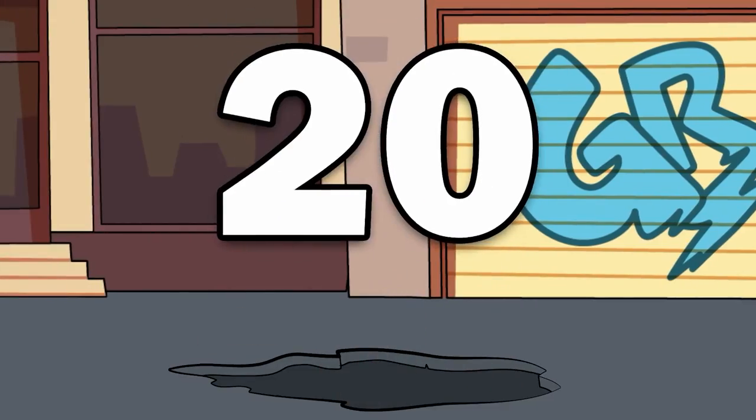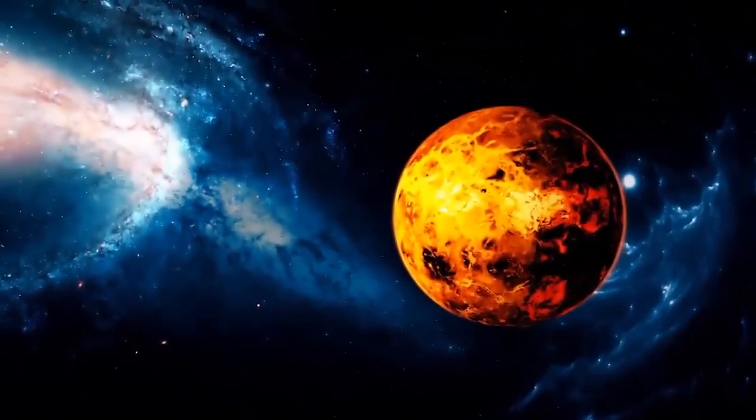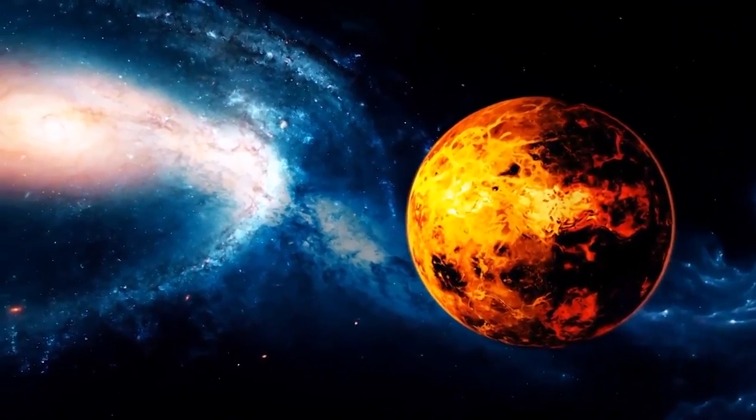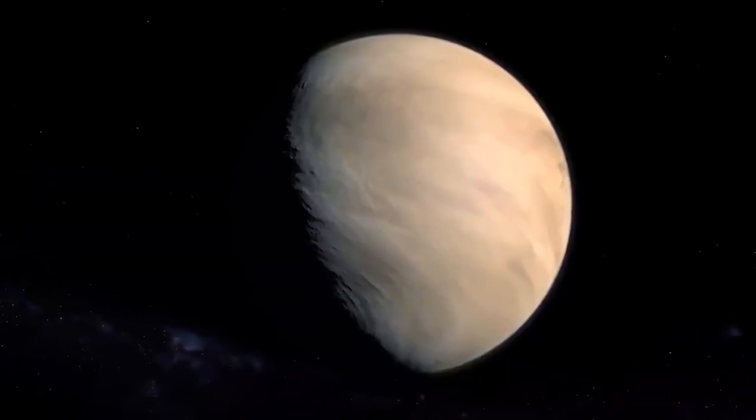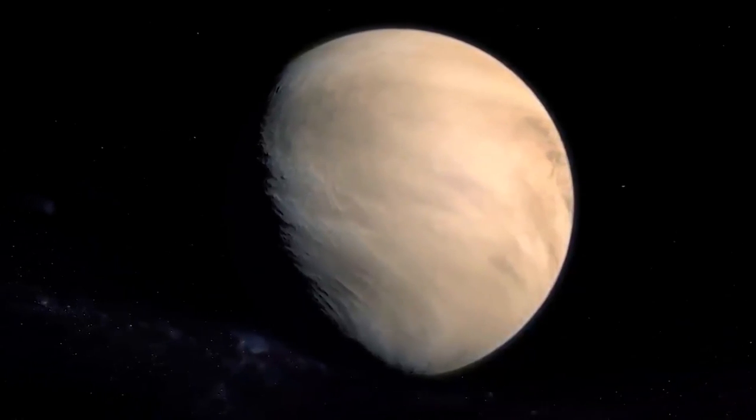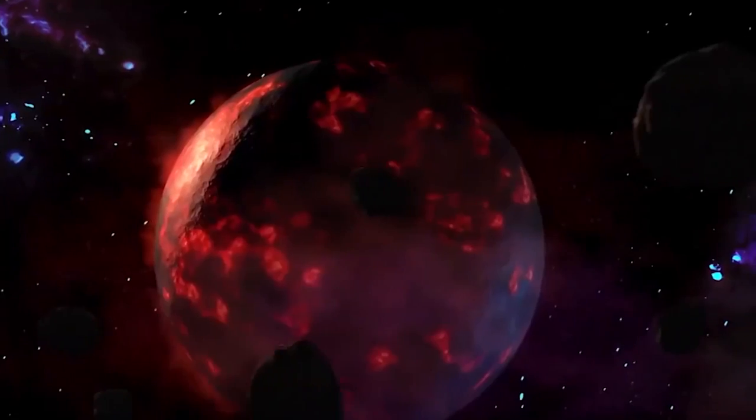Number 20: Venus. You might have thought I'd just go into the depths of space to begin, but I'm actually going to start in our own solar system to show you how dangerous planets can sometimes be close to home.